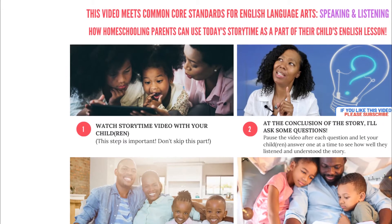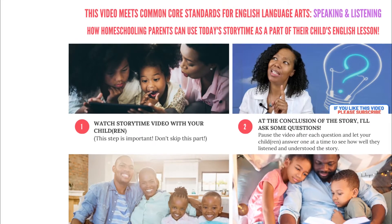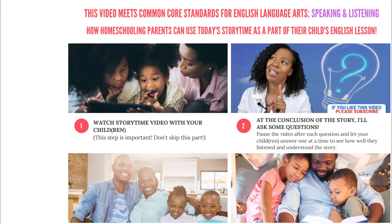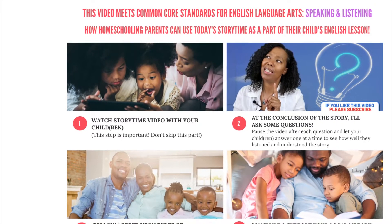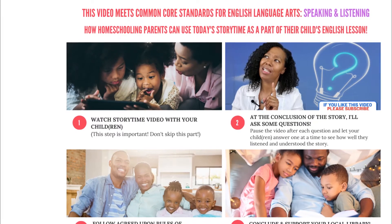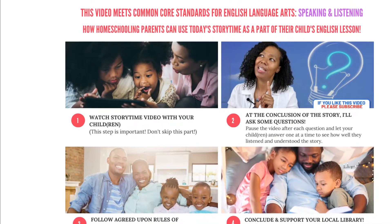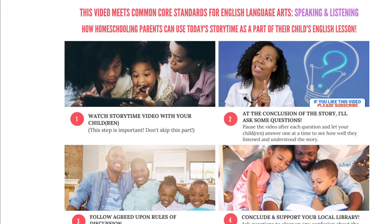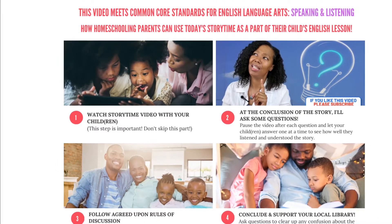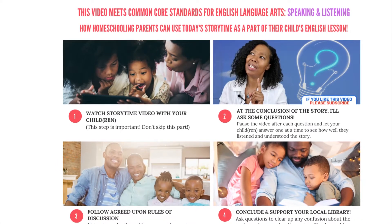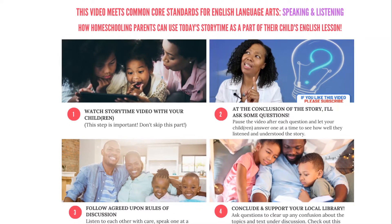Step 3: Follow agreed-upon rules of discussion. Listen to your child with care and then you can dialogue. Speak one at a time about the topics and texts under discussion. And last, Step 4: Ask any further questions to clear any confusion about the topics and texts under discussion.